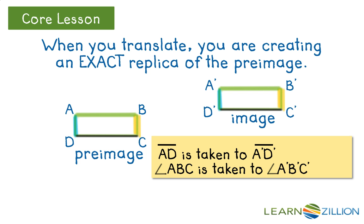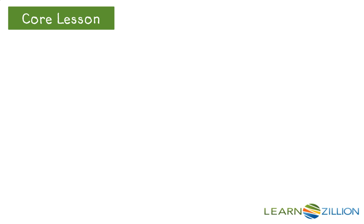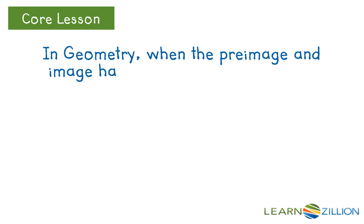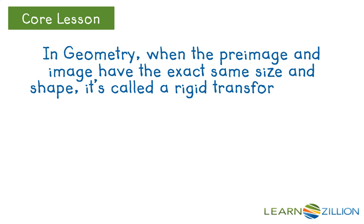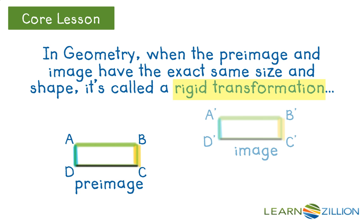Notice that segment AD is the same size and same shape as segment A'D'. Angle ABC is the exact same size, made up of the exact same segments as angle A'B'C'. In geometry, when the pre-image and the image have the same size and shape, it is called a rigid transformation.